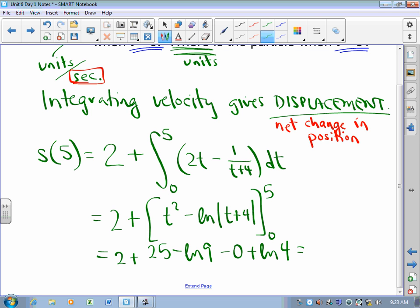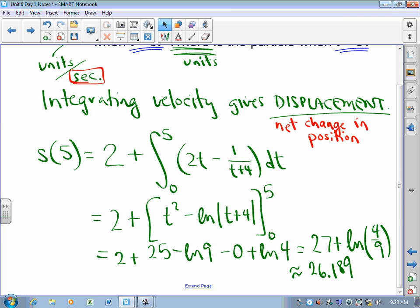And so what's that? That's 27 plus the natural log of 4 ninths. Happens to be approximately 26.189. College board asks you to round to three decimal places.